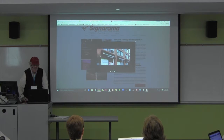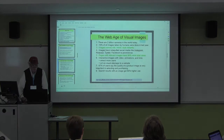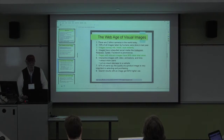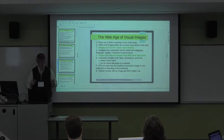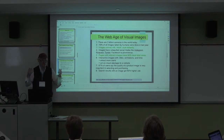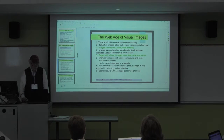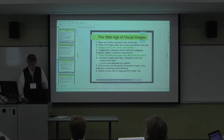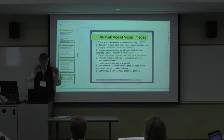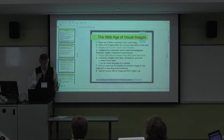67% of users say the quality of a product image is very important in selecting and purchasing, and Signorama has almost ignored that in some of its images where it's trying to sell awnings. Finally, search results with an image get 60% higher click-through according to both Bing and Google. When you do a search and there's an image associated with the result, users will click on it 60% more often than results with no image whatsoever.